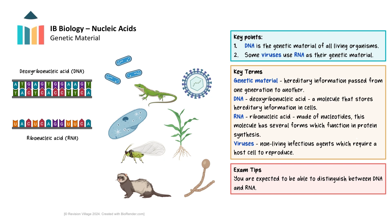The fact that viruses use the same genetic code as all living things has significant implications. Because the genetic code is universal, viruses can potentially infect a wide range of host species. This is why some viruses can jump from animals to humans, such as with zoonotic diseases. It also allows scientists to use viruses as vectors in genetic engineering. One great implication is the creation of vaccines using nucleic acids, such as the mRNA vaccines developed for COVID-19.